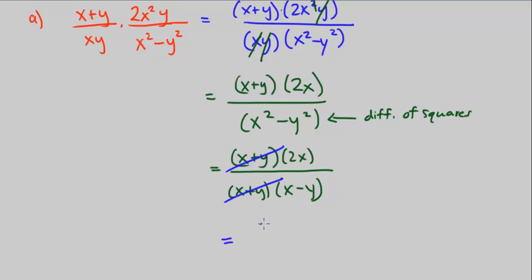So that's going to equal to 2x over x minus y, that's what's left over. So examine this, and that is simplified. So that's our single rational expression, just one fraction.